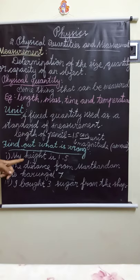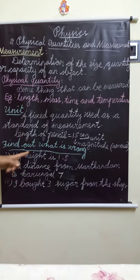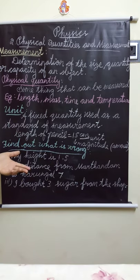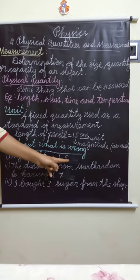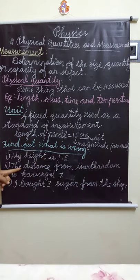Next topic is: find out what is wrong. Three sentences are given and you should find what is wrong. 'My height is 1.5.' What is missing here? The unit is missing. Without a unit we cannot express our height. So my height is 1.5 — what is the unit? Metre. My height is 1.5 metres.